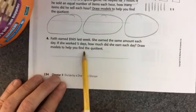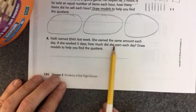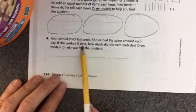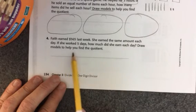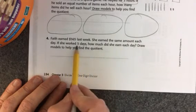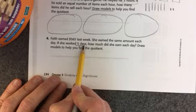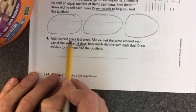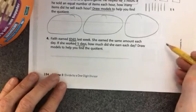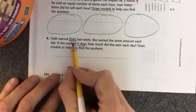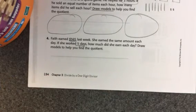Faith earned $565 last week. She earned the same amount each day. If she worked five days, how much did she earn each day? Draw models to help you find the quotient. The five days tells me how many circles I need. And this is the number that I will need to draw. I'll need to do the blocks of 565.